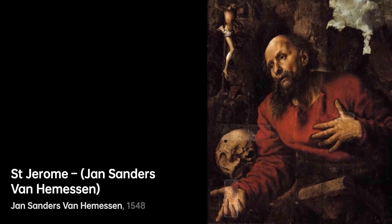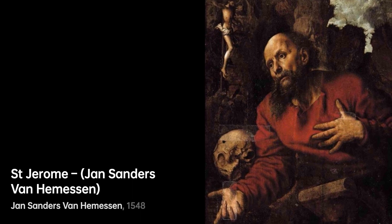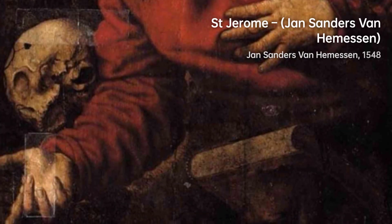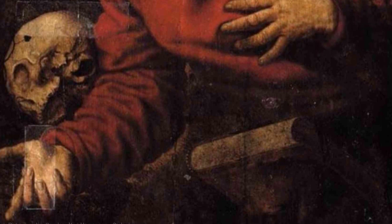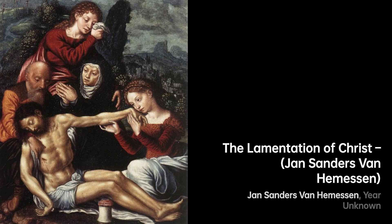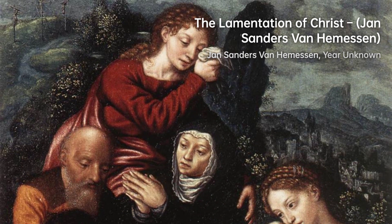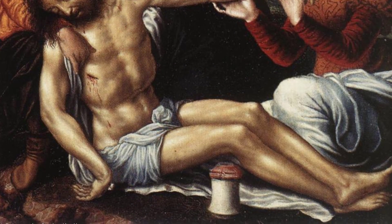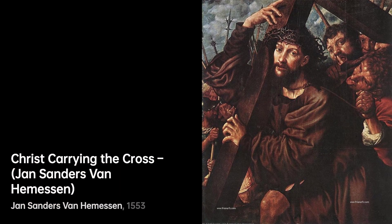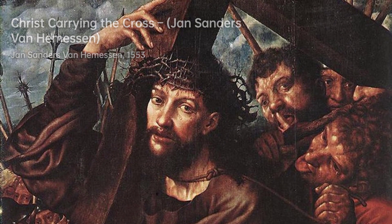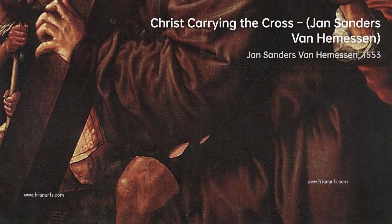Jan Sanders Van Hemessen was a prominent Flemish Renaissance painter who made significant contributions to the art world. His ability to blend Italian influences with a new Flemish visual style showcased his skill and creativity. Van Hemessen's pioneering work in genre painting, particularly the Mannerist Inversion style, set the stage for future artists like Peter Aertsen. His renowned painting, The Parable of the Prodigal Son, exemplifies his mastery in combining religious themes with secular genre subjects. Van Hemessen's exploration of portraits and large nude figures further demonstrated his versatility, and his legacy lives on through his daughter Katharina.